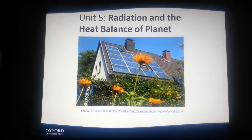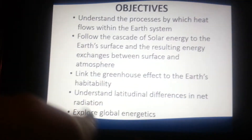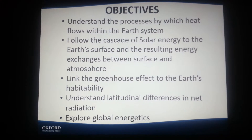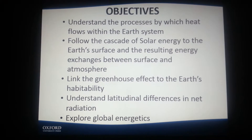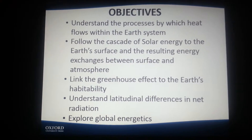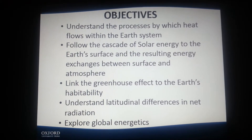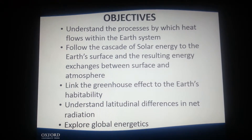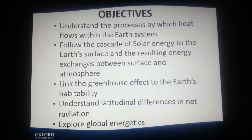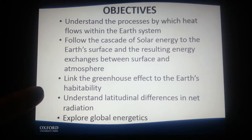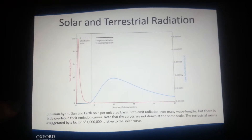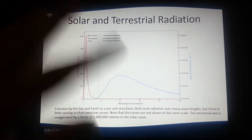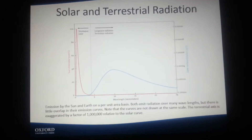Unit 5 is Radiation and the Heat Balance of the Planet. The objectives are: understand the processes by which heat flows within the Earth's system, follow the cascade of solar energy to the Earth's surface and the resulting energy exchanges between surface and atmosphere, link the greenhouse effect to the Earth's habitability, understand latitudinal differences in net radiation, and explore global energetics. This is an image of solar and terrestrial radiation — short-wave being solar and long-wave being terrestrial.